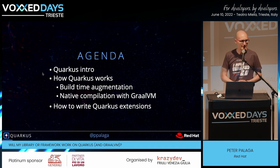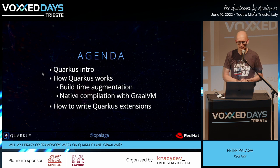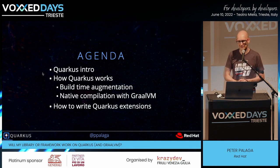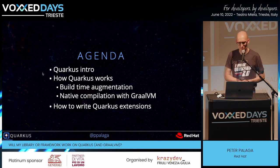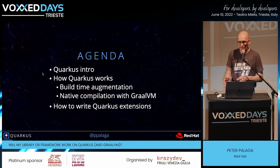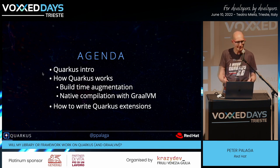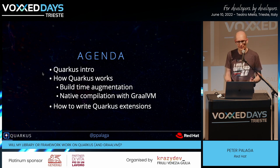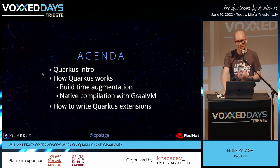This talk consists of three main parts. First, there's a Quarkus introduction. Then I will give you a broad overview about how Quarkus works internally. And the third part, which is the main focus of this talk, is how to write Quarkus extensions. I don't really expect you to start writing Quarkus extensions tomorrow — it's more like showing you some Quarkus internals so that you better understand how Quarkus works. And maybe, like for me, it's an amazing piece of technology — like looking under the hood of a Porsche or Ferrari.